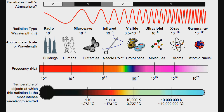They all share similar attributes: they all travel at the speed of light, are measured in Hertz, and are transverse waves. The order in which they are shown are radio waves, microwaves, infrared waves, visible light, ultraviolet rays, x-rays, and gamma rays. This order goes from the lowest frequency — radio waves — all the way up to gamma rays, which have the highest frequency.